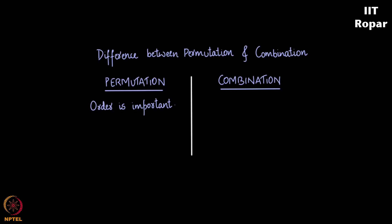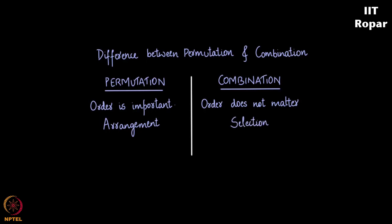In permutations we speak of arrangements, like arrangements of alphabets and so on, whereas in combinations we speak of selection or choosing elements from a given set. So please keep this in mind whenever you are learning permutations and combinations — they are distinct concepts.